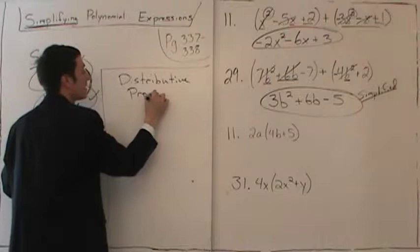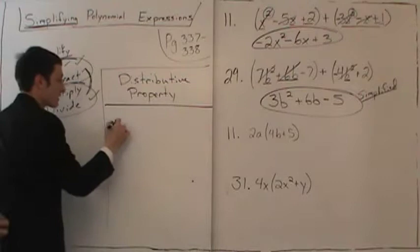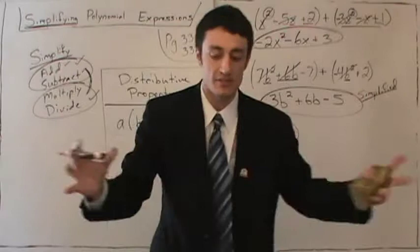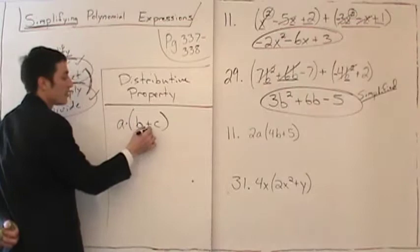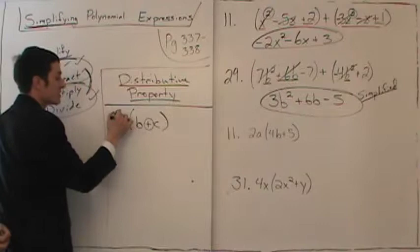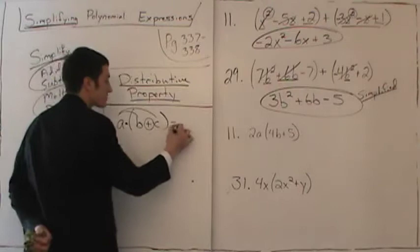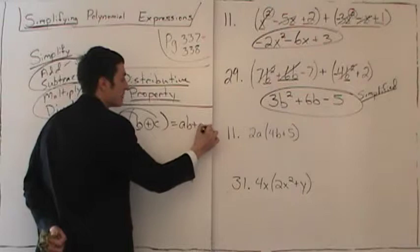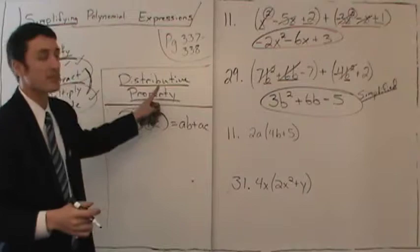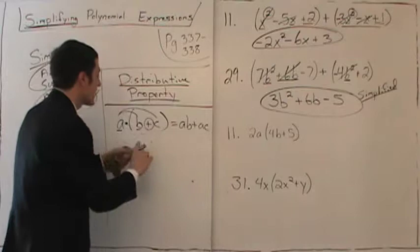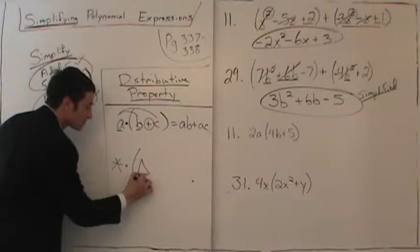The key is to understand the distributive property. What property relates multiplication to addition? When multiplication meets addition — for A multiplied by the quantity B plus C — distributive property applies: A times B gives AB, and A times C gives AC. No matter what you're looking at, when multiplication meets addition, distributive property applies.